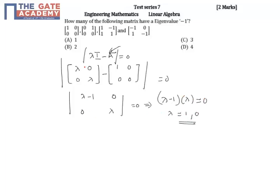Similarly, you find out this matrix, this matrix, and this matrix. If you find out all the eigenvalues for these matrices, then for this matrix only you will get eigenvalues of minus 1 comma minus 1. These two matrices will not give eigenvalues of minus 1.